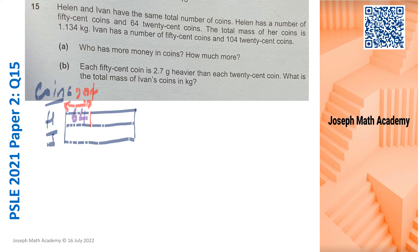As for Ivan, his 20 cent coins, he has 104. So this would be Helen's 50 cent coins and this would be Ivan's 50 cent coins. So the difference in coins is here.